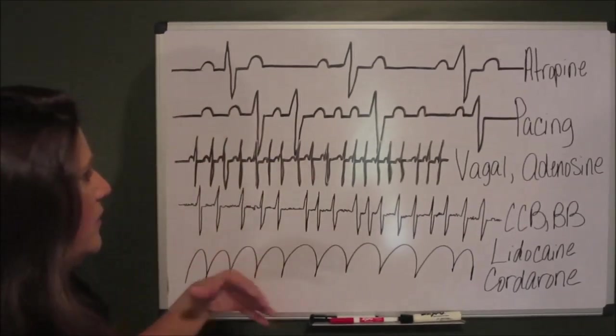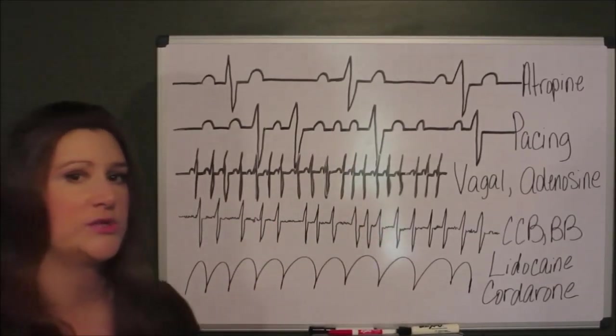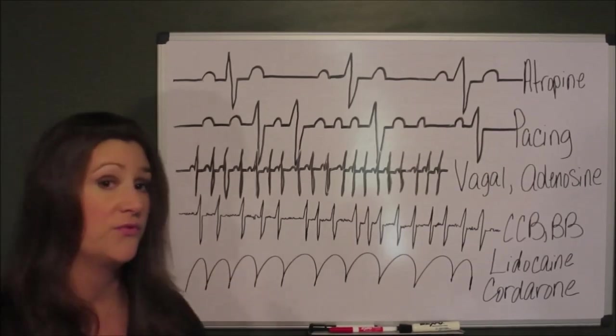So far we've been talking about SVT, AFib, AFlutter, which are atrial dysrhythmias, and VTAC obviously is originating from the ventricles.